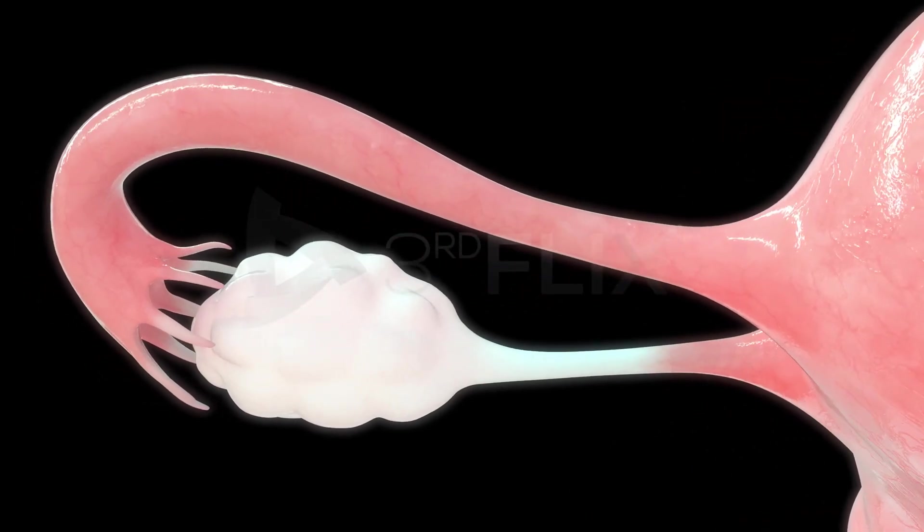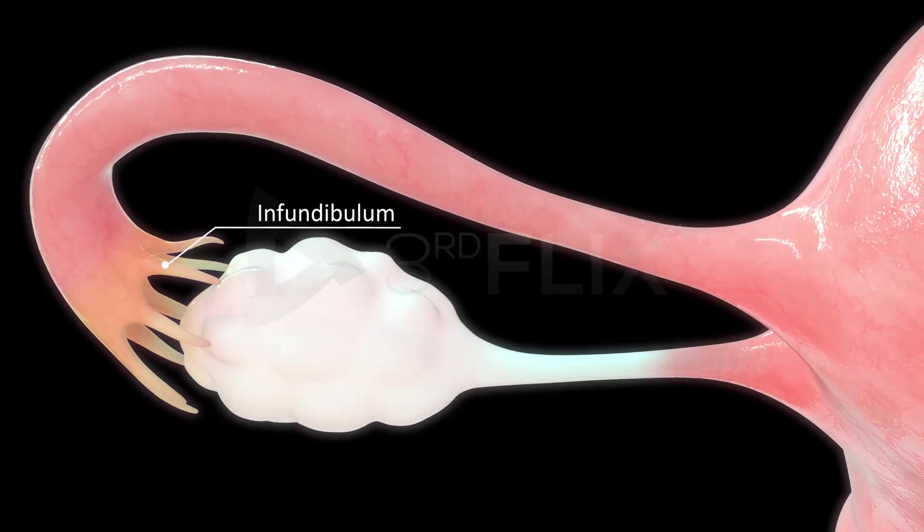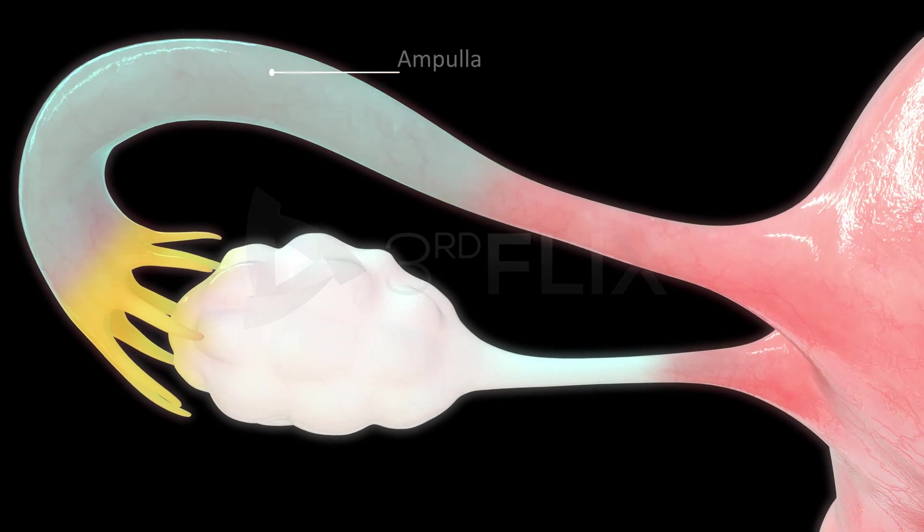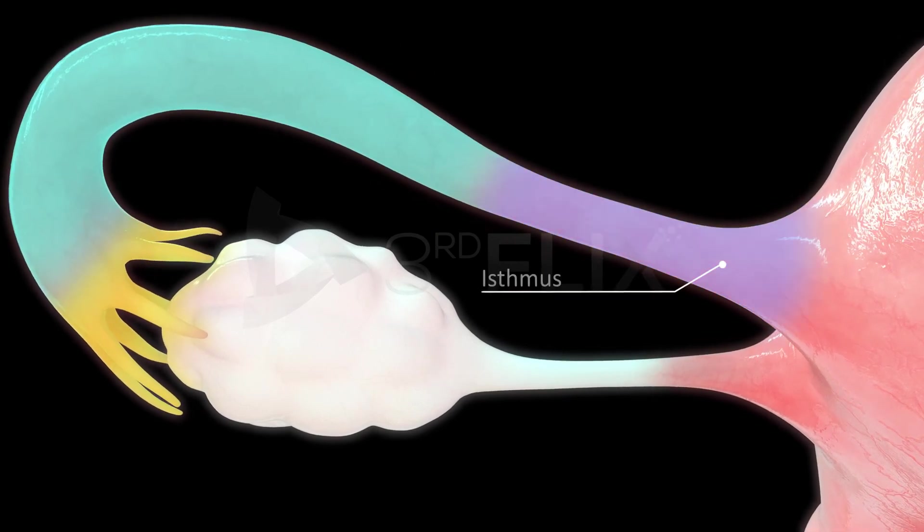The fallopian tube is divided into three regions: the infundibulum, ampulla, and isthmus.